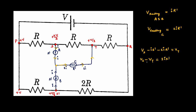So potential at S minus potential at T should be equal to 3 times of I R dash. We know that the potential difference between point S and point T is V by three from our initial voltage divider rule analysis. So 3 times I R dash equals V by three, which means I R dash is going to be V by 9. So we can easily say the reading in voltmeter A and B is going to be V by 9, and the reading in voltmeter C is 2V by 9.